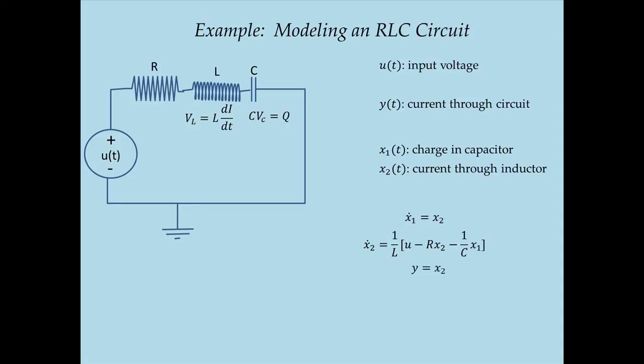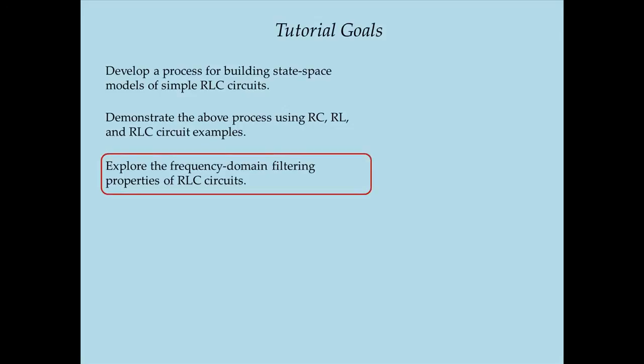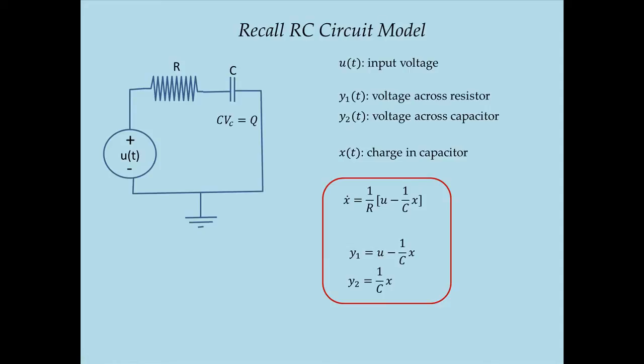Now that I've built state-space models of linear RC, RL, and RLC circuits, I want to explore the frequency domain filtering properties, focusing specifically on the RC circuit. I'll leave it to you to build simulation code for RL and RLC circuits. Recalling the RC circuit model: ẋ = (1/R)·U − (1/(RC))·X; Y1 = U − X/C; Y2 = X/C — where U(t) is input voltage, Y1 and Y2 are voltages across the resistor and capacitor respectively, and X is the charge in the capacitor.